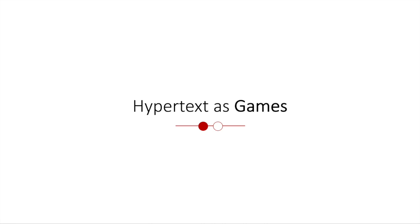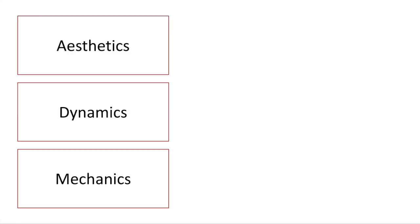Let's think about hypertext as games. A very common framework for understanding games is MDA — the Mechanics, Dynamics, and Aesthetics framework. In this framework, mechanics represent the things you can do, the lego blocks of the game. The dynamics are how those come together to form some kind of behavior and system. And the aesthetics are the emotional impact, the experience that the player has when following out that behavior within that system.